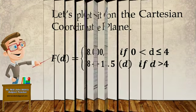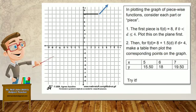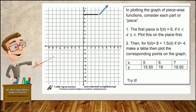In plotting the graph of piecewise functions, consider each part or piece. The first piece is f of d equals 8 if the distance is less than or equal to 4 — try to plot this on the plane first. Then for f of d equals 8 plus 1.5 multiplied by the distance if it is greater than 4, make a table then plot the corresponding points on the graph.